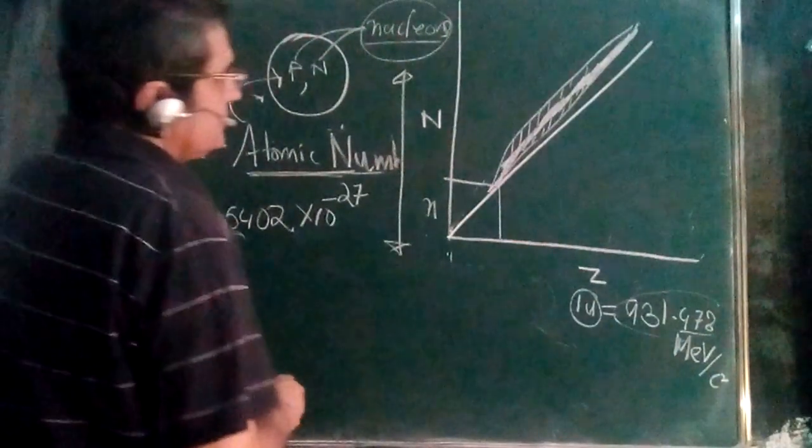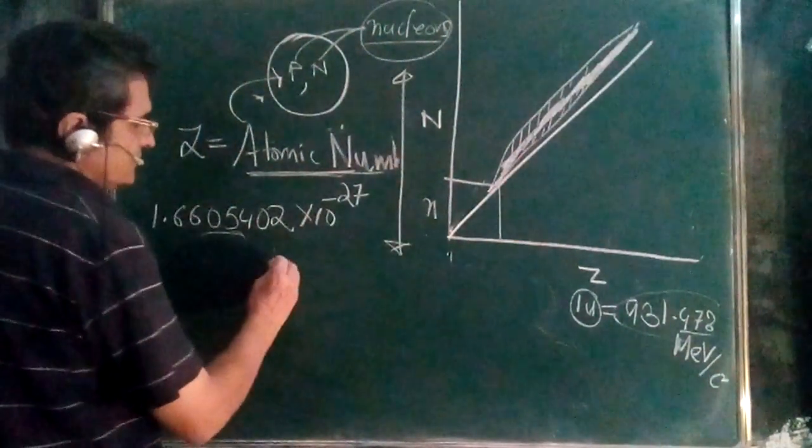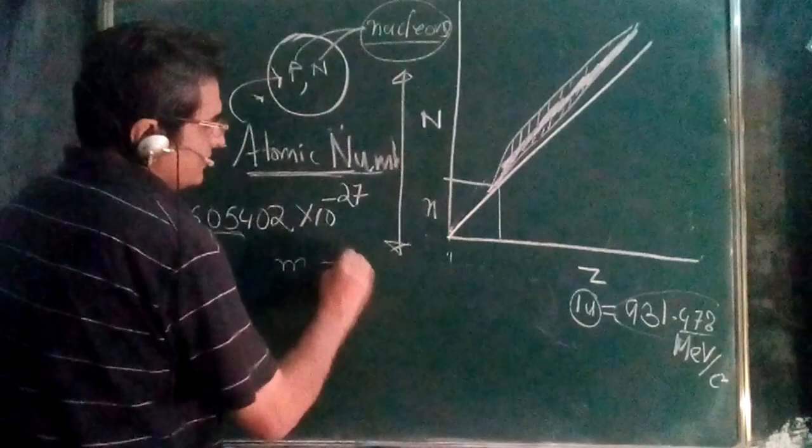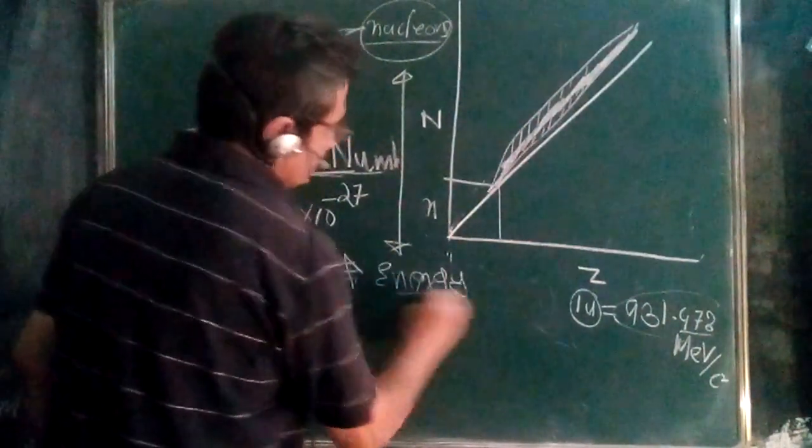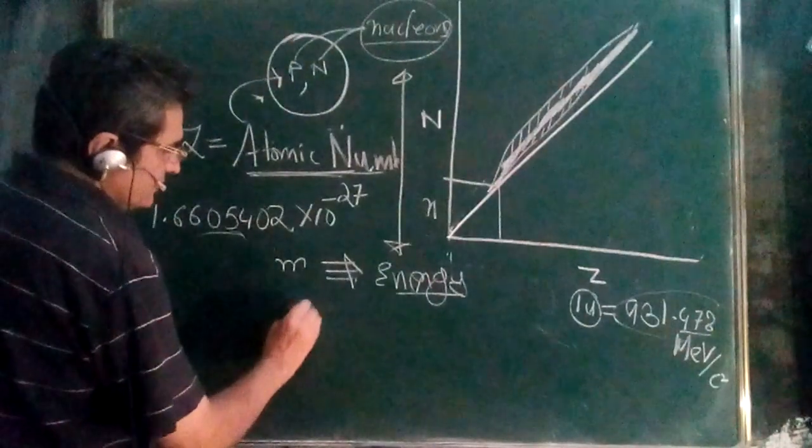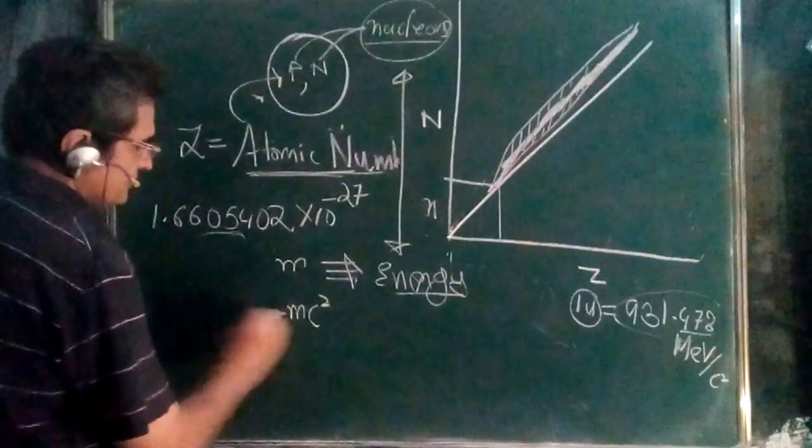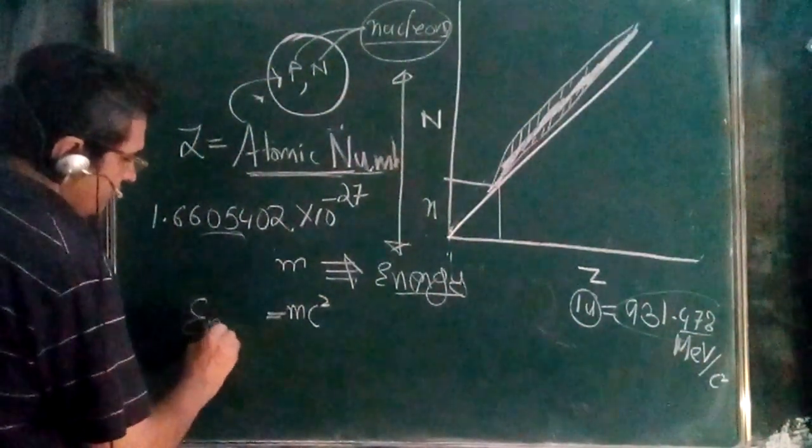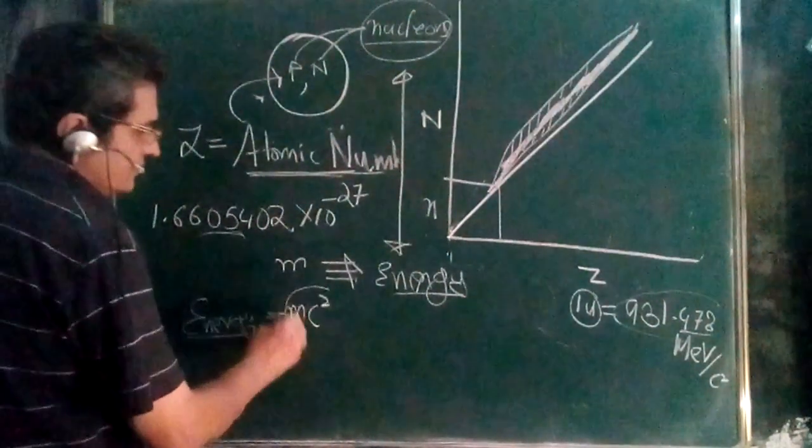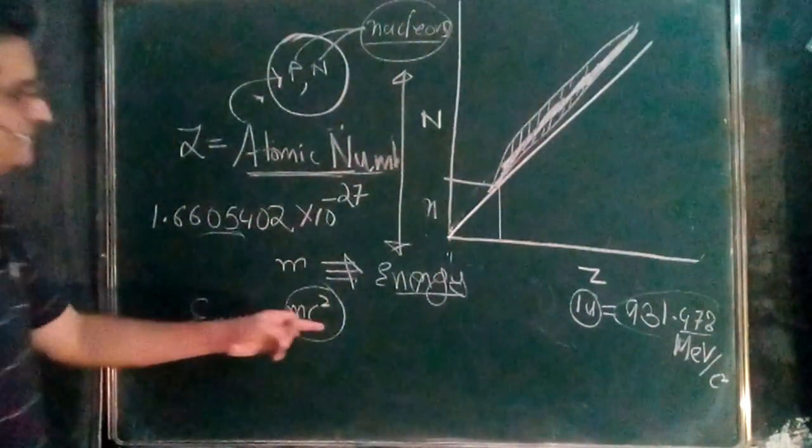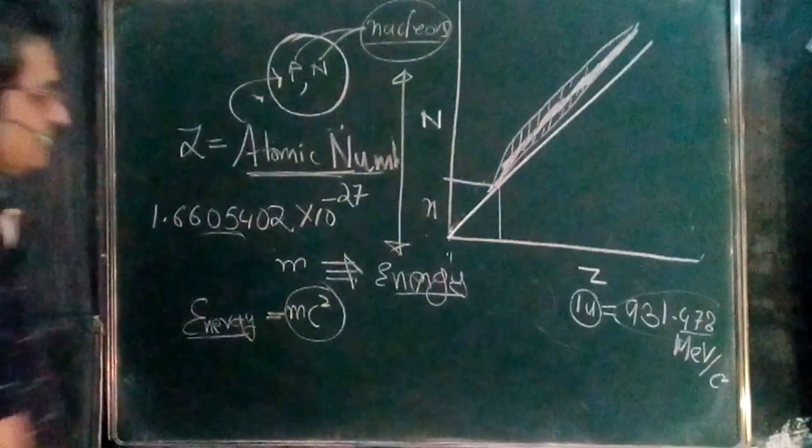We will be using the convention of converting mass into energy. This is the mass-energy equivalence relationship - Einstein's relationship. The energy associated with mass is given by E equals MC squared.